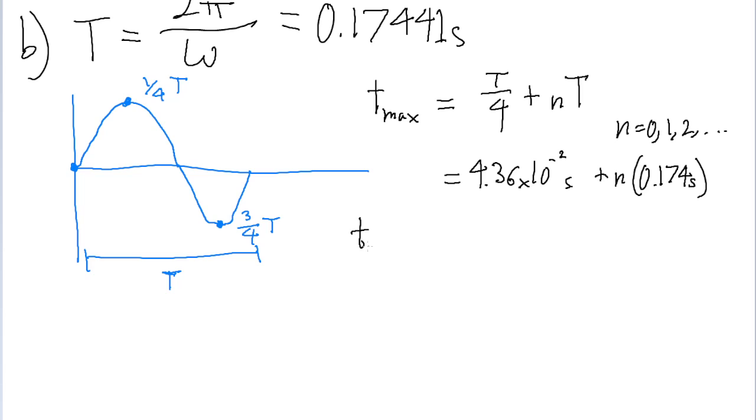For t min, the minimum time, that's going to be three-fourths of the period, again, plus any integer multiple of the period.